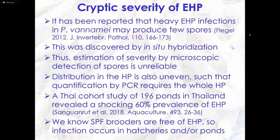It has been reported that sometimes very heavy infections of EHP in Penaeus vannamei produce very few spores. We discovered this by in-situ hybridization. So the estimation of severity by detection of spores is not reliable. The distribution in the hepatopancreas itself is also uneven, so to quantify by PCR, you need to use the whole hepatopancreas.